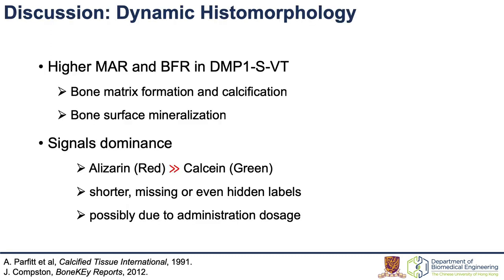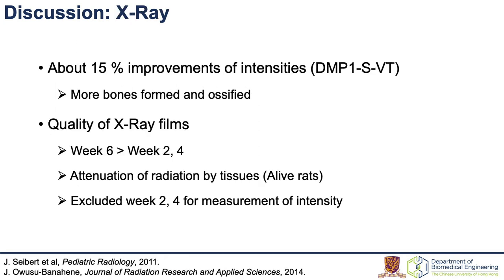Let's discuss the results observed. Higher MAR and BFR indicated that bone matrices are formed, mineralized at the surface, and calcified. However, the red dye was dominant in signals over the green dye — some labels would be softer, missing, or even hidden. This could possibly be due to dosage administration. Higher intensities in X-ray would imply more bone formation and ossification. The poor quality of X-ray images was found for weeks 2 and 4, because the X-ray was partially absorbed by the tissues, making signals weaker. The femur was harvested at week 6, so radiations were less attenuated.